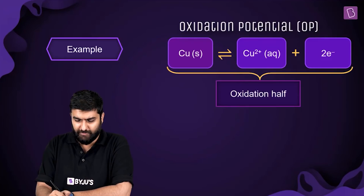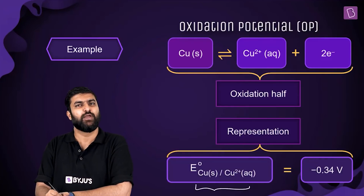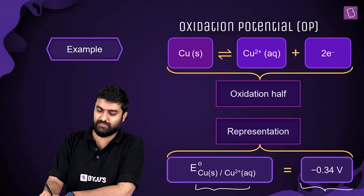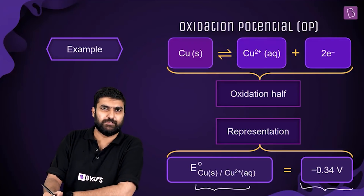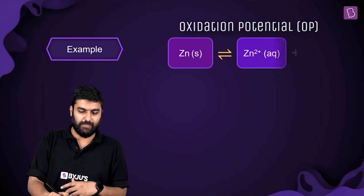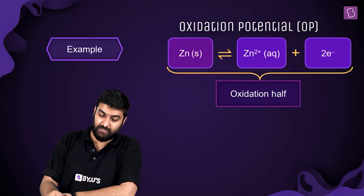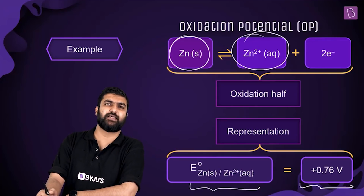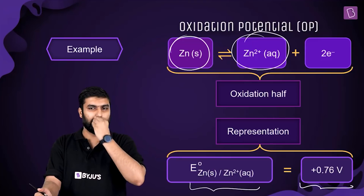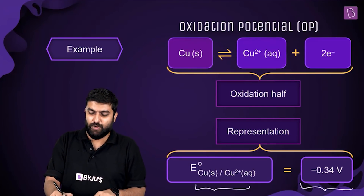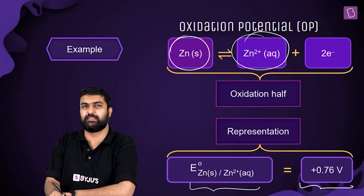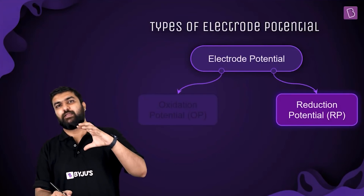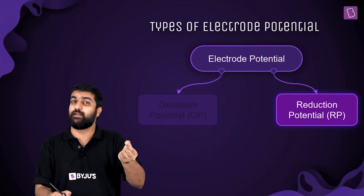Looking at specific values: the representation for copper is Cu solid slash Cu²⁺ aqueous — states like solid and aqueous must be mentioned — and the value is minus 0.34 volts. For zinc, the representation is Zn solid slash Zn²⁺ aqueous, with a value of plus 0.76 volts. You do not have to remember these exact numerical values.